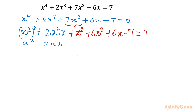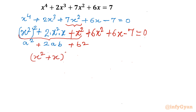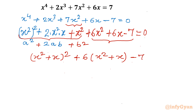Considering the first three terms together, we can write them as (x² + x) whole squared. What is left is 6 common from the next two terms, giving us 6(x² + x), and minus 7 equal to 0.